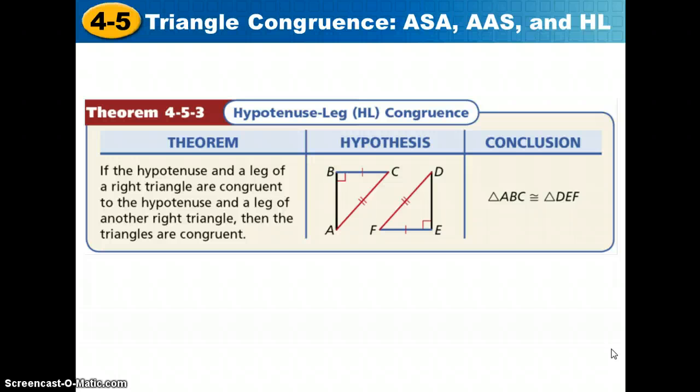We have one more congruence theorem to talk about, and that is the hypotenuse leg congruence theorem. Hypotenuse leg, we use those names specifically because this only applies to right triangles. So we can only use hypotenuse leg if we know that the triangles are right triangles. So in our proofs, we must say that we have right angles or therefore establish right triangles. Okay, so if the hypotenuse and leg of one triangle are congruent to the hypotenuse and leg of another right triangle, then the right triangles are congruent.